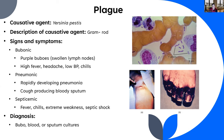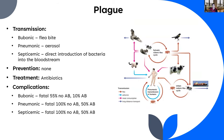Pneumonic plague occurs when the bacterium reaches the lungs, causing rapidly developing pneumonia and a cough producing bloody sputum. Septicemic plague skips the lymphatics entirely and goes directly into the bloodstream. Diagnosis involves culturing whichever specimen is relevant — bubo aspirate, sputum, or blood. Bubonic plague is spread through flea bites; pneumonic plague can spread person-to-person via aerosolized droplets; septicemic plague typically results from direct introduction into the bloodstream.